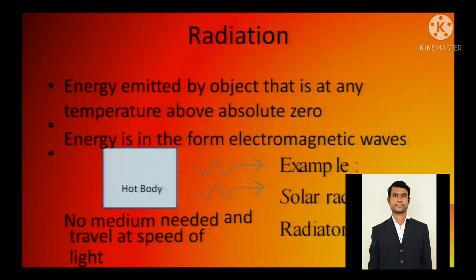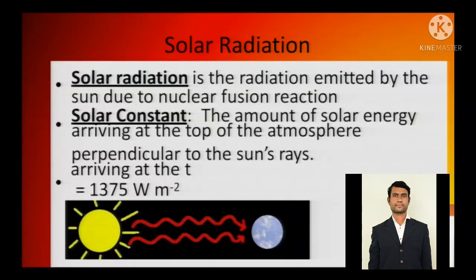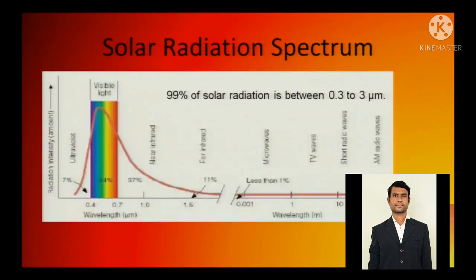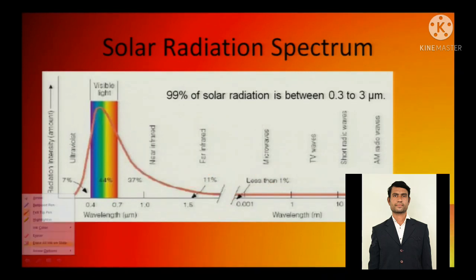Radiation - the simple energy emitted by object, likewise the importance of the same thing. Solar radiation is radiation emitted by the sun due to nuclear fusion reaction. Solar constant: the amount of solar energy arriving at the top of the atmosphere perpendicular to the sun's rays has been calculated as 1375 watts per meter square. Solar radiation spectrum - this is the visible solar radiation spectrum. This is infrared, this is near infrared, this is microwaves. So this is the range where we can see, this is the visible range.